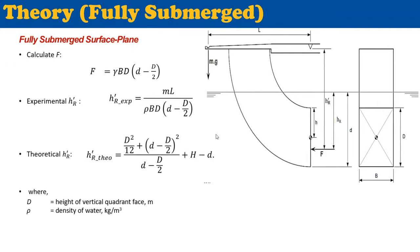For a fully submerged surface, the equivalent force F uses a different equation involving dimensions b, d, and small d — the fixed cross-section dimensions will be provided. Similarly, you find both the experimental and theoretical h'_r and compare them. The density of water is known. After completing the test, we compare experimental and theoretical values.